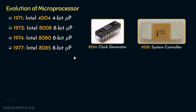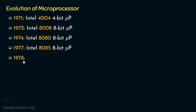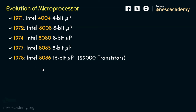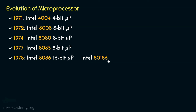After the 8085, Intel shifted their focus to increasing the word length of the processor. In 1978, Intel introduced the 8086 — Intel's first 16-bit microprocessor — which incorporated 29,000 transistors on a single chip. It laid the foundation of the x86 architecture, which later became a standard for personal computers. The later versions of the 8086 were Intel 80186 and Intel 80286, the latter consisting of 134,000 transistors on a single chip.